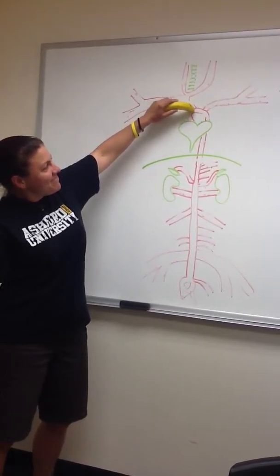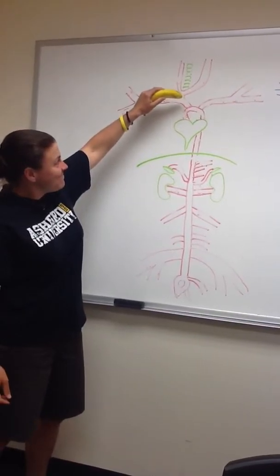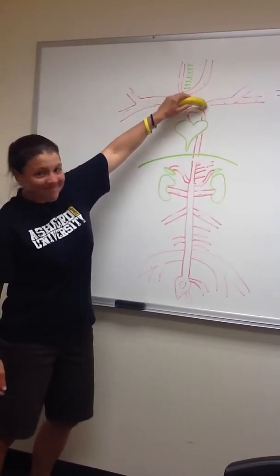From there, it breaks off into the brachiocephalic and into the left subclavian vein, in my piggy, that is.